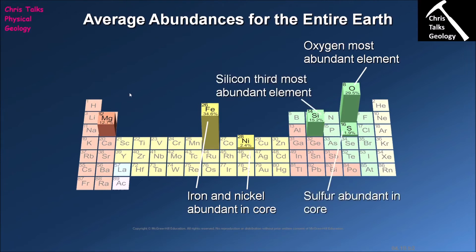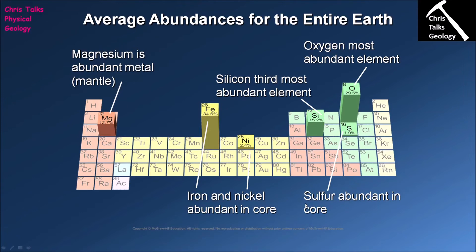Sulfur has also increased in abundance because it is quite common in the earth's core. However, hydrogen, sodium, potassium and calcium have dropped to very low concentrations for the whole earth, because they are not present at the same concentrations as other elements. They are concentrated in the continental crust and so we tend to think of them as quite common, but when you look at the earth as a whole the concentrations of sodium, potassium and calcium are actually relatively low.